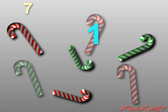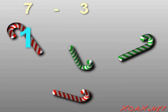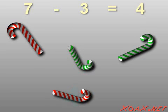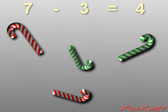and we eat one, two, three of those candy canes, then we have one, two, three, four candy canes left. So seven minus three equals four.